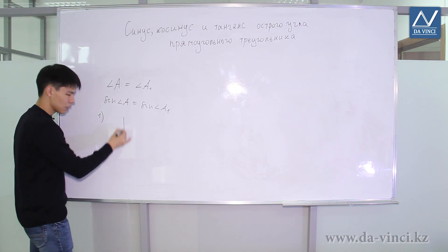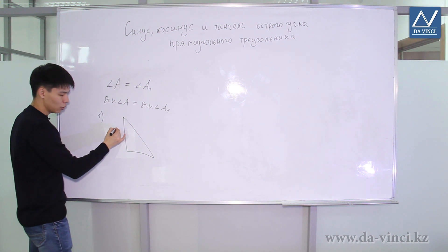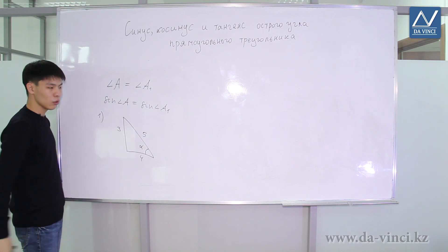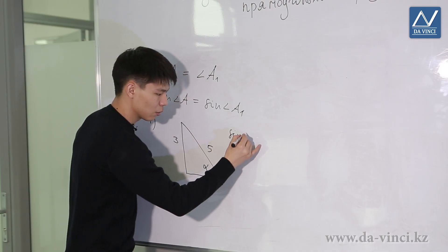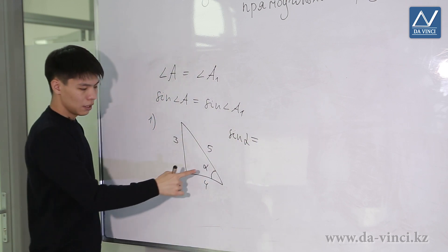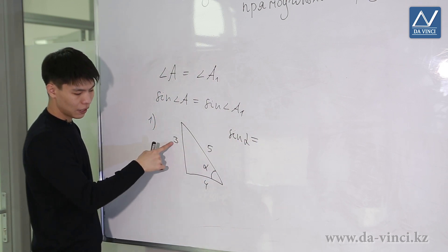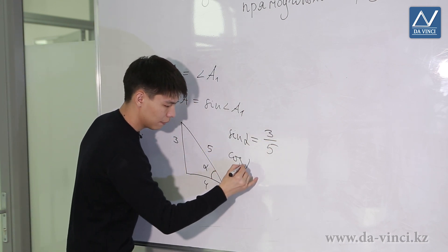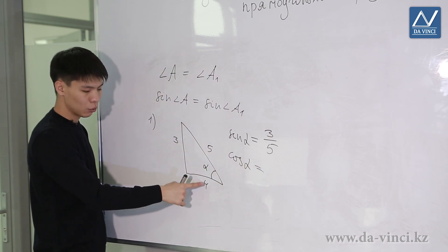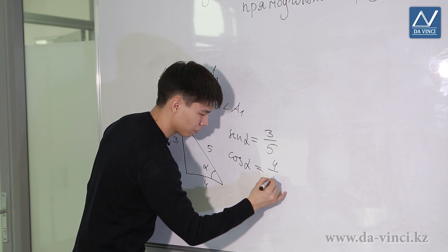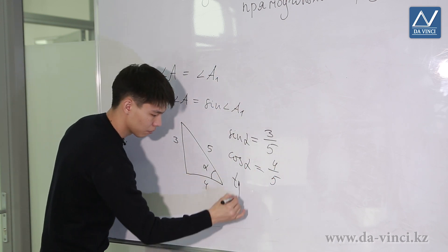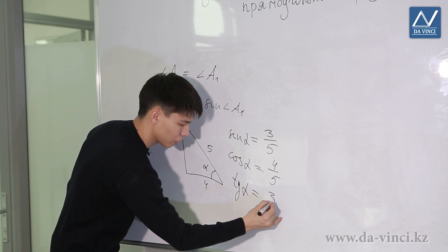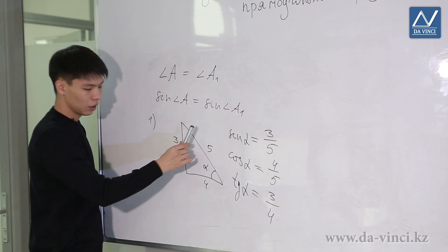Let's suppose we have an Egyptian triangle with sides 3, 4 and 5, and this angle is alpha. It is required to find its sine, cosine and tangent. The sine of alpha is the ratio of the opposite leg to the hypotenuse, that is 3 divided by 5. Cosine of alpha is the ratio of the adjacent leg to the hypotenuse, that is 4 divided by 5. Tangent of alpha is the ratio of the opposite leg to the adjacent leg: 3 divided by 4. Thus we have found all the values.